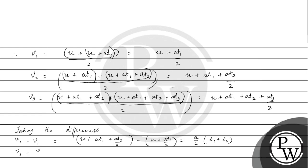Similarly, v3 minus v2 will be u plus a t1 plus a t2 plus a t3 by 2 minus u plus a t1 plus a t2 by 2. This will give us a by 2 into t2 plus t3.